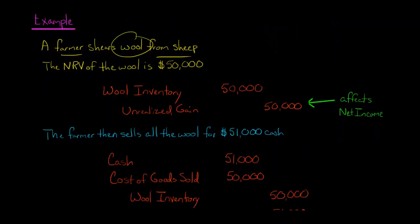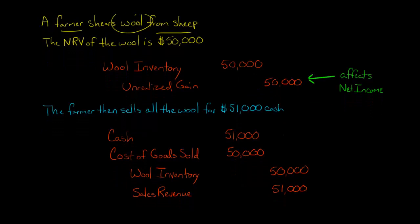Now, the farmer sells the wool for $51,000 cash. They're going to debit cash for $51,000 and credit sales revenue for $51,000. But they also have to get the inventory off the balance sheet, so they're going to credit wool inventory for $50,000, which is what we originally put it on the balance sheet at, the net realizable value of $50,000. And then we're going to debit cost of goods sold for $50,000. This is a similar journal entry to selling a regular product that wasn't put on the balance sheet at net realizable value.